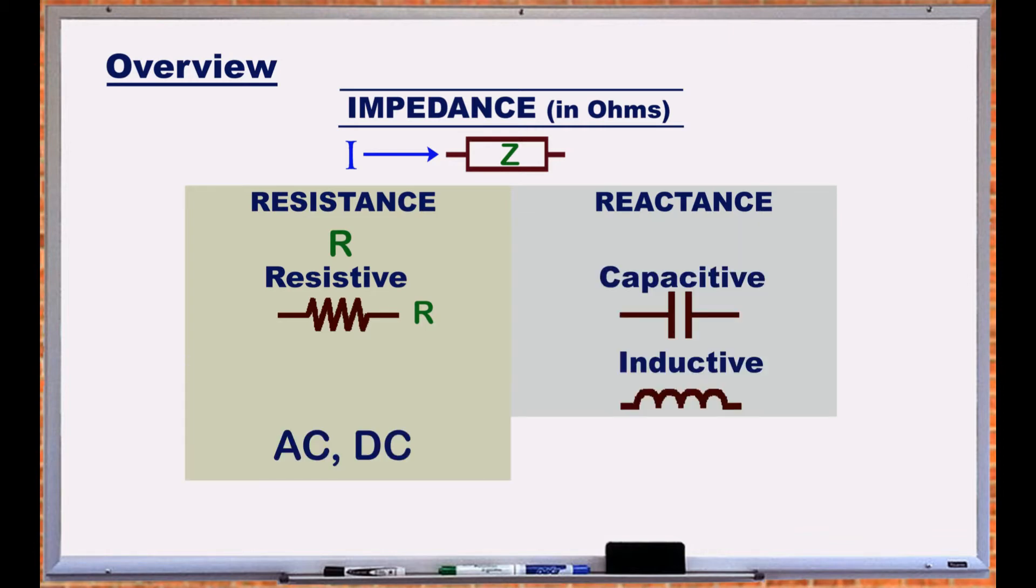Reactance exists in two forms: capacitive and inductive, as in capacitors and inductors. It is represented by the letter X, capacitance by C, and inductance by L. It is only present in AC circuits.